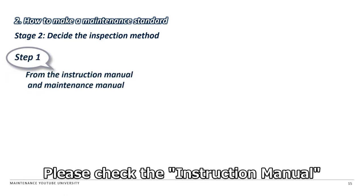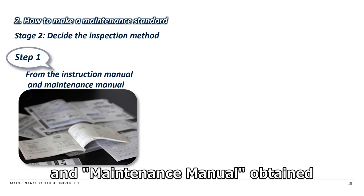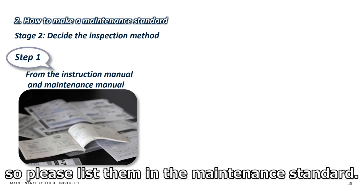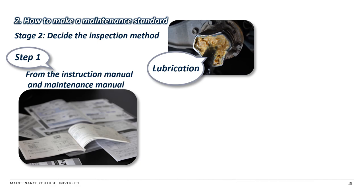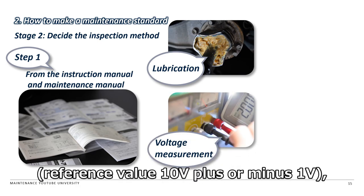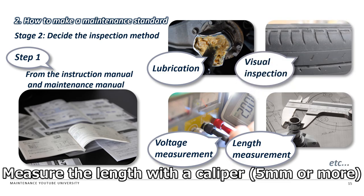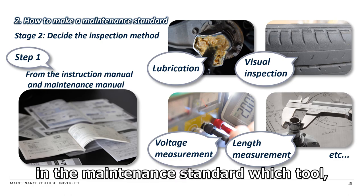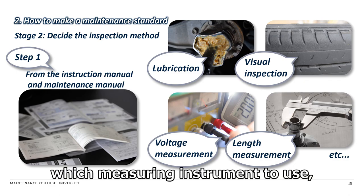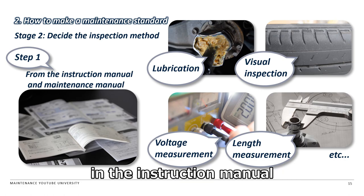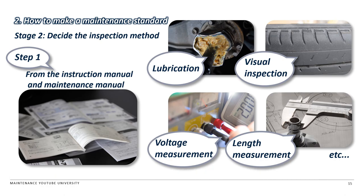In Step 1, please check the instruction manual and maintenance manual obtained in Step 1 of Stage 1 again. These specifically describe the inspection method and reference value for determination, so please list them in the maintenance standard. For example: grease up with a grease gun 5g; measure the voltage with a tester, reference value 10V ±1V; measure the range with a caliper, 5mm or more. We will specifically describe in the maintenance standard which tool, which measuring instrument to use, and how to inspect. If the inspection method described in the instruction manual or maintenance manual is not specific, contact the equipment manufacturer.